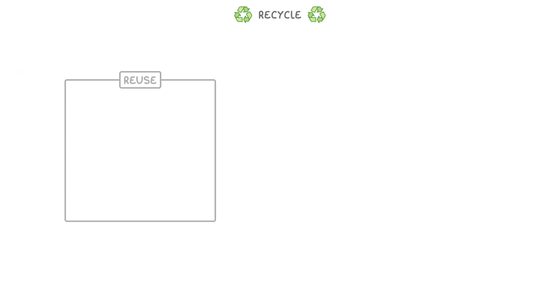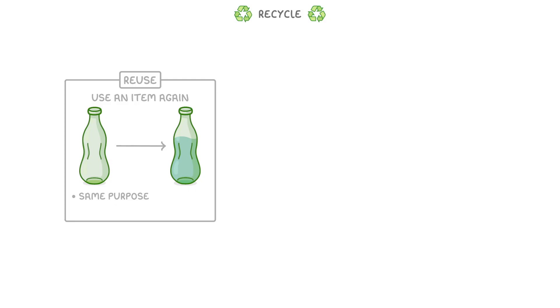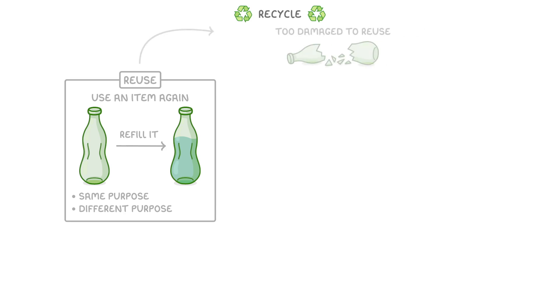Once we've finished with a product, the most sustainable thing that we can do is to reuse or recycle it. Reusing an item just means to use it again, and that could be for the same purpose or a different purpose. For example, when we're finished with a glass bottle, we might refill it with water and use it again. Sometimes though, the product might be too damaged to reuse, and instead we can recycle it.